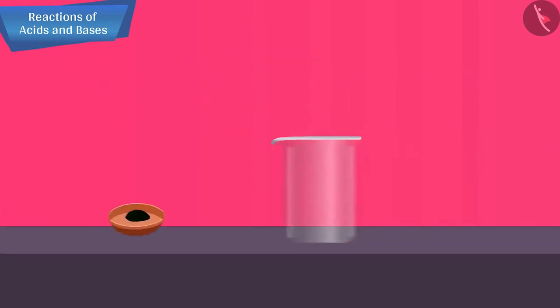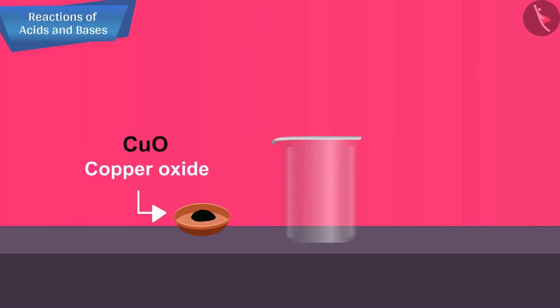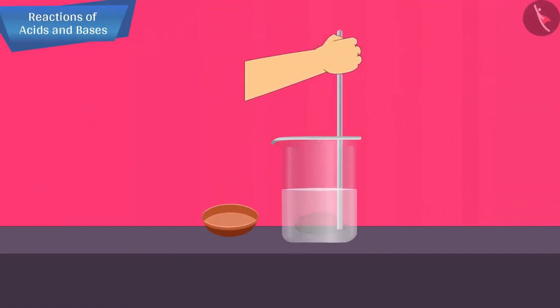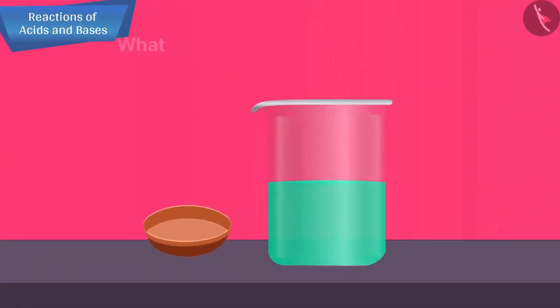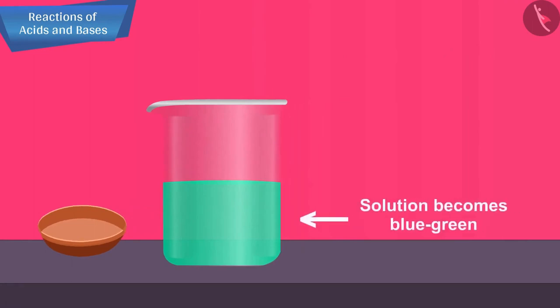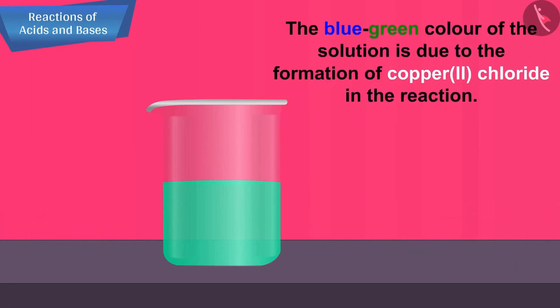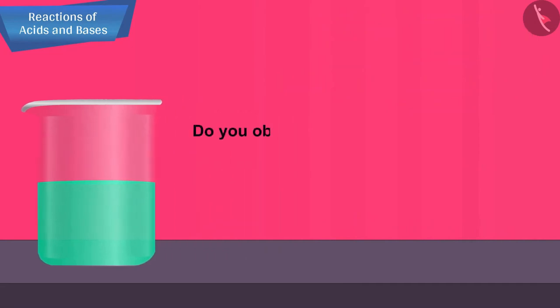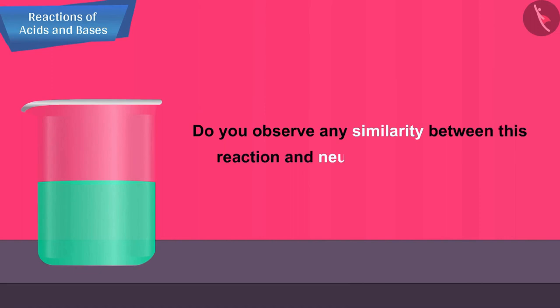Let's conduct an activity. Take a small amount of copper oxide in a beaker and add dilute hydrochloric acid slowly while stirring. You will notice that the colour of the solution becomes blue-green and the copper oxide dissolves. The blue-green colour is due to the formation of copper(II) chloride. We can conclude that acids react with metal oxides to form salt and water. Do you observe any similarity between this reaction and the neutralization reaction?